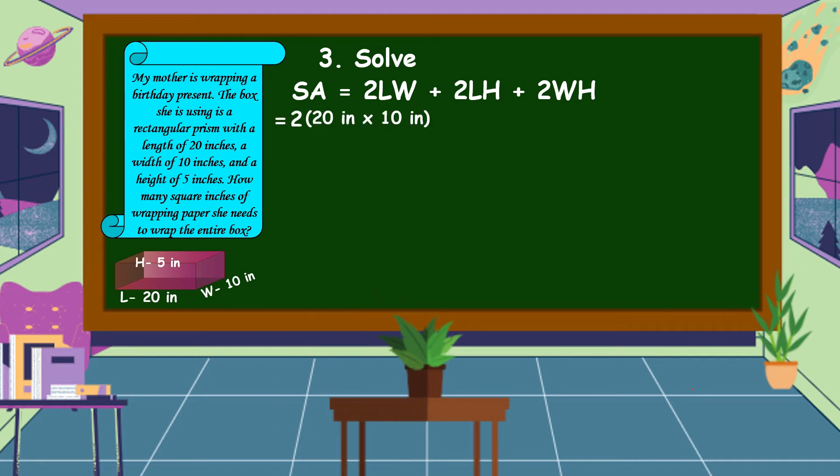So, 2 times 20 inches times 10 inches plus 2 times 10 inches times 5 inches plus 2 times 10 inches times 5 inches. So 2 times 10 inches is equal to 200 inches times 2 is equal to 400 inches square, plus 20 inches times 2 is equal to 200 inches square.